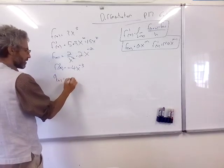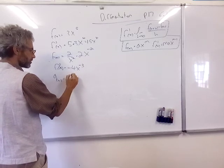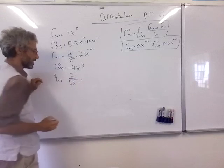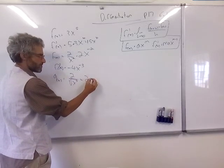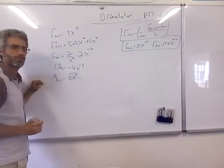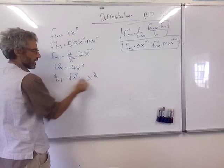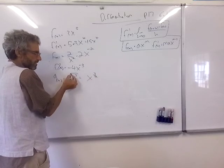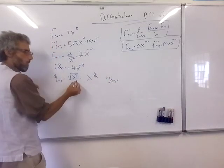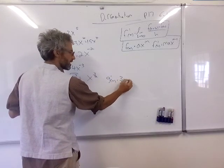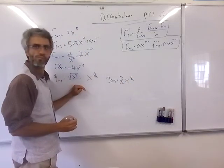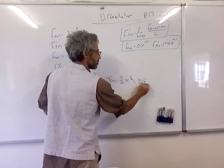Let's try one more: the square root of x³. How do we write that so we can find the derivative? It's x^(3/2) — the exponent goes on top and the root becomes the denominator of the fraction. So the derivative is (3/2)x^(1/2), which we can write as 3√x / 2.